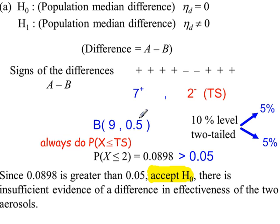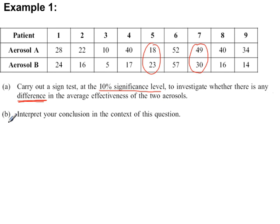So n is nine. This is always 0.5. We go to the binomial tables. We look up P(X ≤ test statistic), which is two. Which gives us a probability which is greater than 0.05. So we accept H0. And there was a part B.